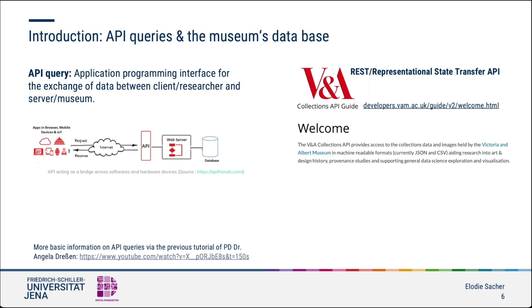Let's start by answering the question of why some major museums such as the MoMA and the V&A museum have set up a query service that works with what is called an application programming interface. Basically, the API automatically transmits the researcher's queries to the museum's server, and the server's response sends the data back to the client. Thus, the API facilitates the transfer of data between two programs.